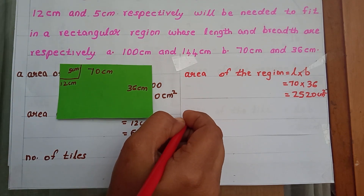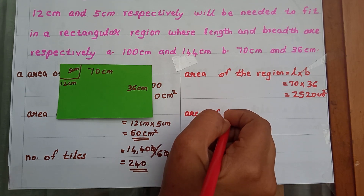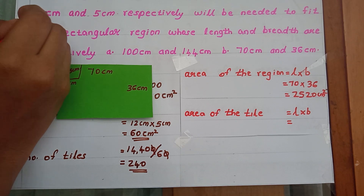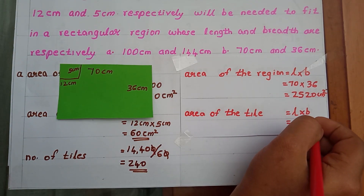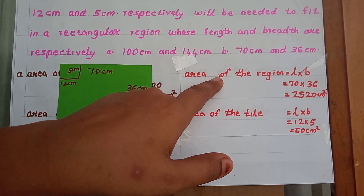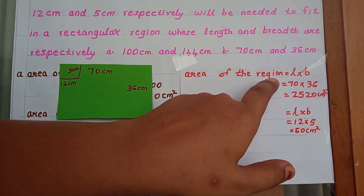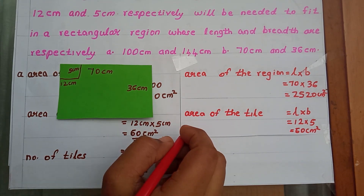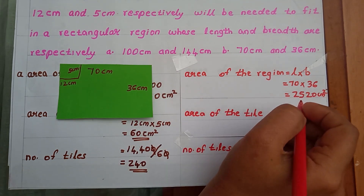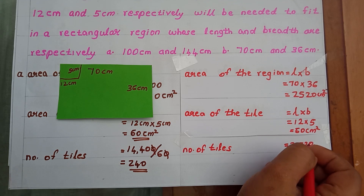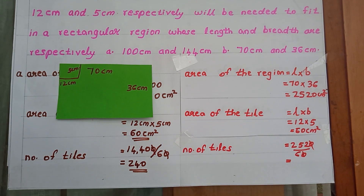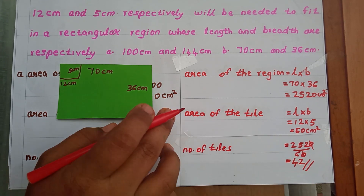The area of the tile equals length into breadth: 12 cm into 5 cm equals 60 cm². To find how many tiles are needed, divide the area of the region by the area of the tile: 2520 divided by 60. Cancelling the two zeros gives 252 divided by 6 equals 42. The number of tiles needed is 42.